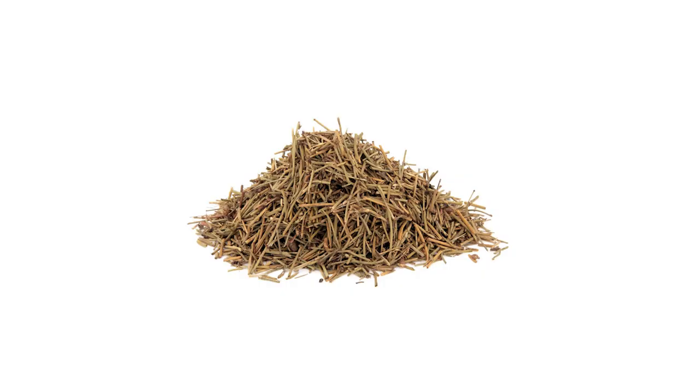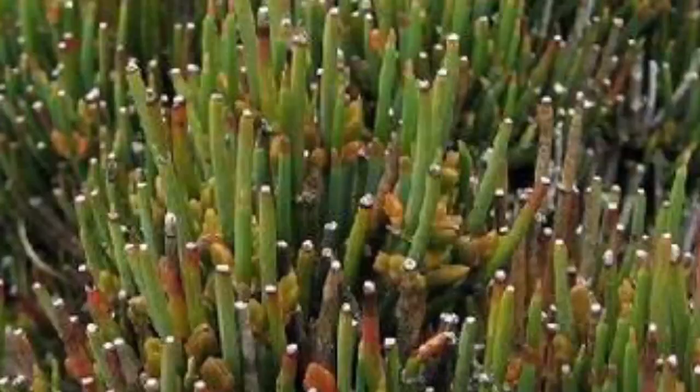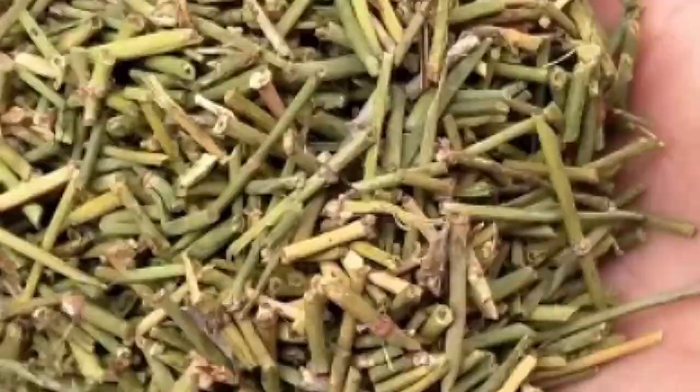The three ephedra species, ephedra sinica, ephedra equisetina, and ephedra intermedia, are collectively known by their Chinese name ma huang.